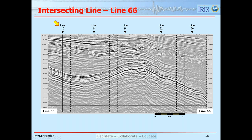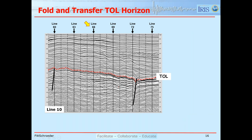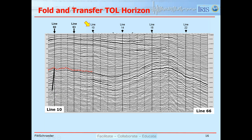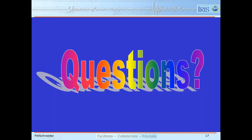This line intersects east-west line 66. What we can do is fold the intersecting line, line it up at the intersection point, and transfer the red Top Latrobe horizon. So we're looking at a north-south line intersected with an east-west line — that's essentially what you do in mapping the prospect. Here's the main part of the anticline, the Barracuda lead, that our company bid on these two blocks for.